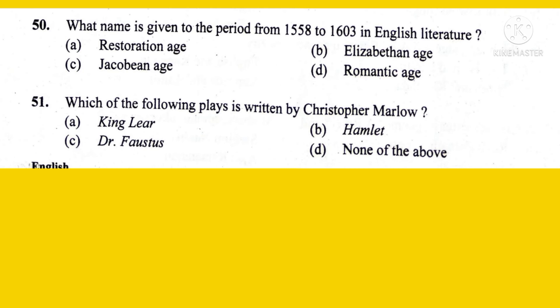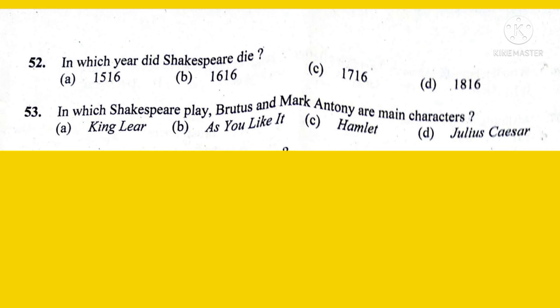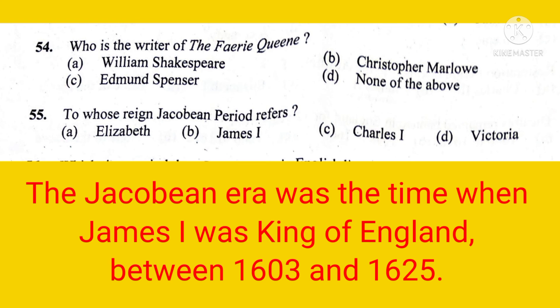What name is given to the period from 1558 to 1603 in English literature? The right option is the Elizabethan Age. Which of the following plays is written by Christopher Marlowe? The right answer is Option C, Dr. Faustus. The Elizabethan Era is the period of English history when Queen Elizabeth I ruled England, often considered the Golden Age. In which year did Shakespeare die? The right answer is Option B, 1616. In which Shakespeare play are Brutus and Mark Antony main characters? The right option is Julius Caesar.